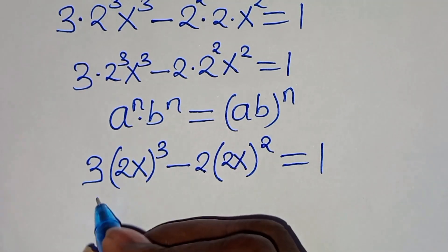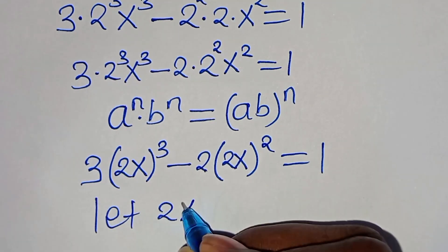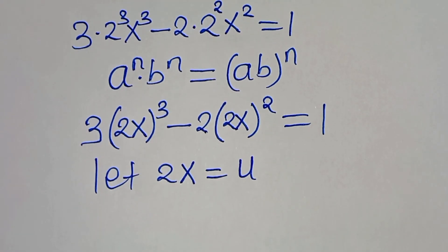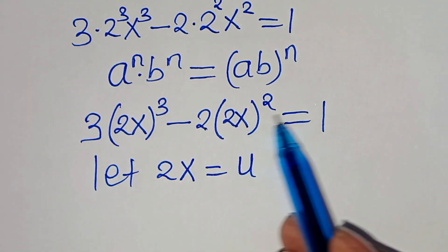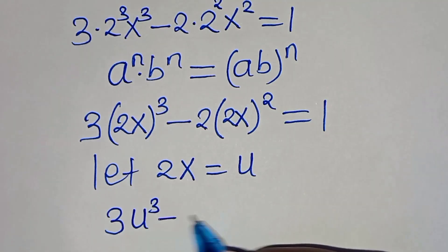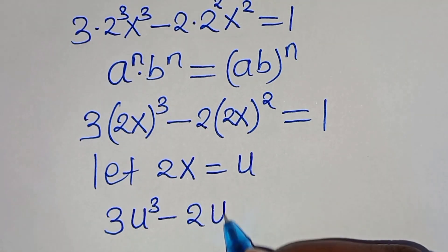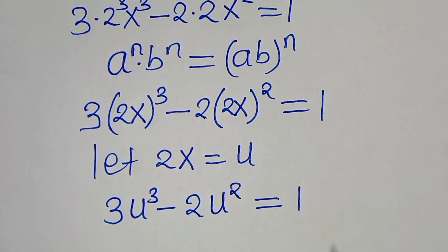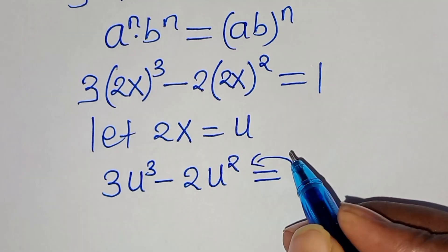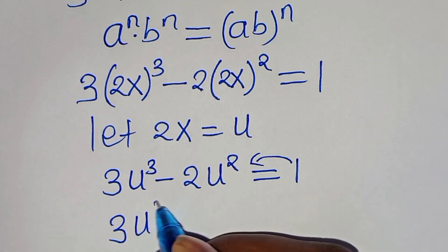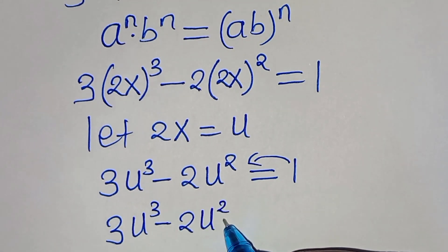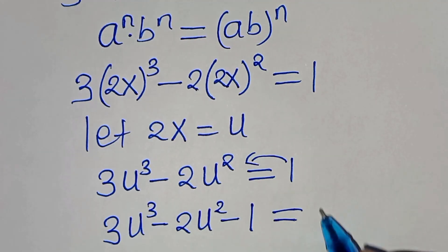The next step is that we can let 2x be equal to u. Substituting u into this equation, then we have 3u to the power of 3 subtract 2u to the power of 2, this is equal to 1. So, let's take 1 to the left-hand side, so that now we have 3u to the power of 3 minus 2u to the power of 2 subtract 1, this is equal to 0.